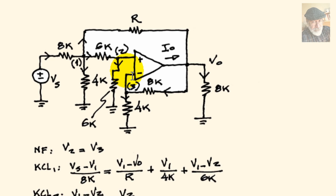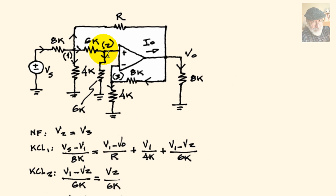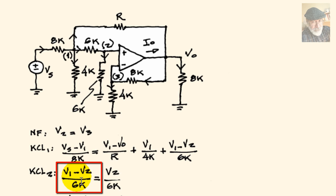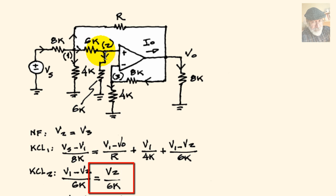KCL for node 2 has only two terms. The current entering is V1 minus V2 over 6 kilohms, which equals the current leaving the node: V2 over 6 kilohms.